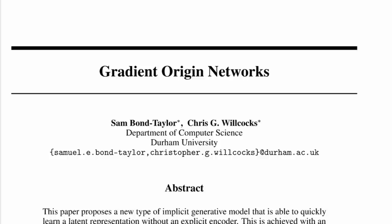Today we'll look at Gradient Origin Networks by Sam Bond-Taylor and Chris G. Wilcox of Durham University. On a high level, this paper trains implicit representation networks, but not on single data points, but on entire datasets. It does so by using a latent encoding of each data point, obtained not through an explicit encoder, but by looking at the gradient of the latent variable when initialized at the origin.